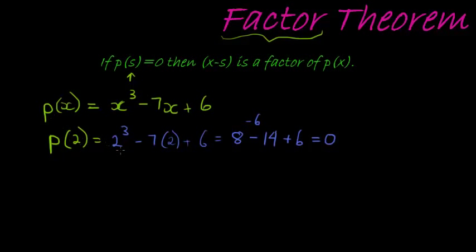Now, from the previous theorem, the Remainder Theorem, we know that if we take x minus 2 and we equal it to 0, then x is equal to 2.